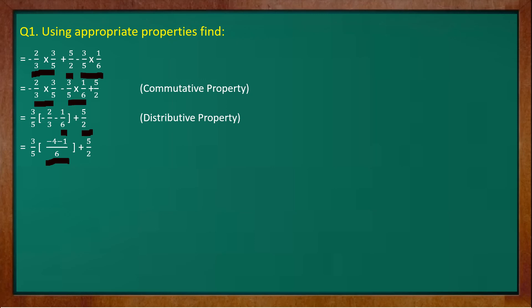So now we will be taking 3 by 5 and minus 4 minus 1. While solving minus minus we will add and we will put the sign of minus. So it will give us minus 5, so 3 by 5 in bracket minus 5 upon 6 bracket close plus 5 by 2. Now when we remove this bracket we will get the sign of multiply because these two terms are multiplying with each other. 3 by 5 multiply minus 5 upon 6 plus 5 by 2.